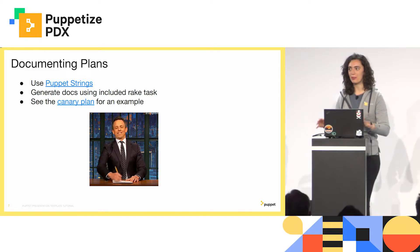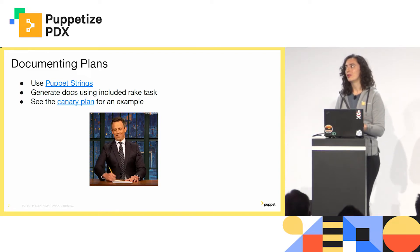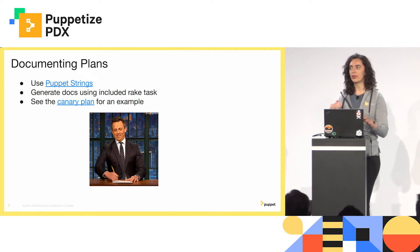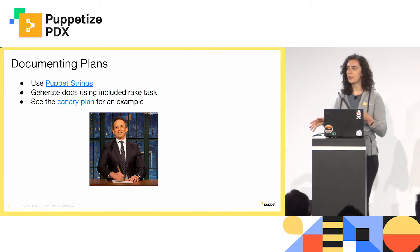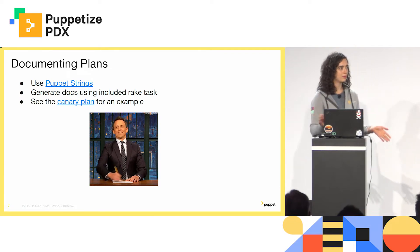A little bit of inside baseball: when we do add a bolt plan show command, we're planning to build it on Puppet Strings. So your documentation efforts will not be for naught. Eventually that will probably be what we support for displaying documentation on the command line, in Puppet Enterprise, on the Forge — all of that.